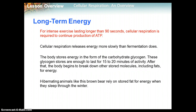For intense exercising longer than 90 seconds, cellular respiration is required to continue ATP production. Cellular respiration releases energy more slowly than fermentation. The body stores energy in the form of the carbohydrate glycogen, enough for 15 to 20 minutes of a workout. After that, the body begins to break down other stored molecules including fats for energy. Hibernating animals like the brown bear rely on stored fat for energy when they sleep through the winter.